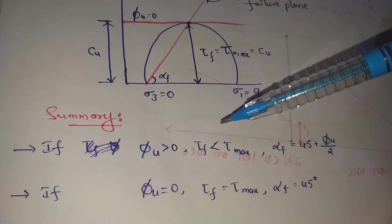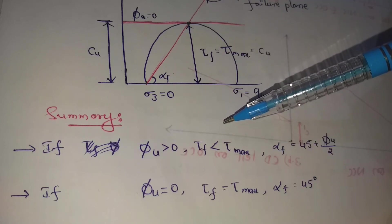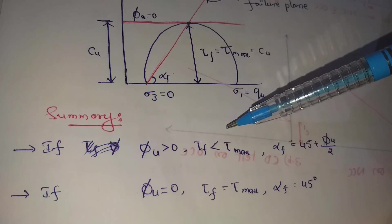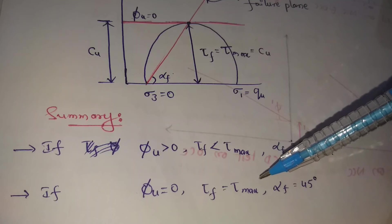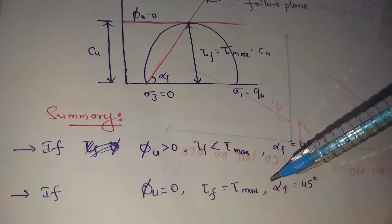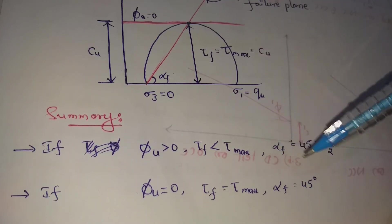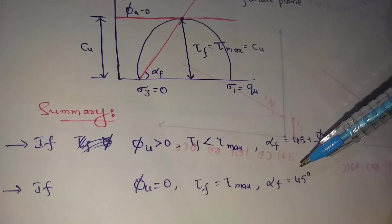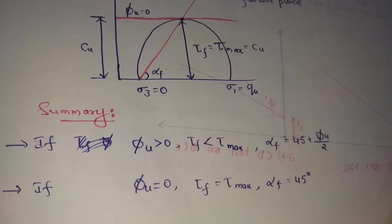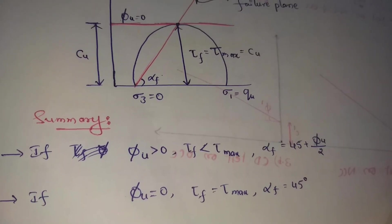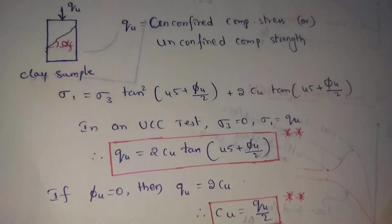That is why, if φu is equal to 0, then failure shear stress is equal to maximum shear stress — these two are equal. The failure plane angle alpha f is equal to 45 degrees. This gives us the unconfined compressive stress.